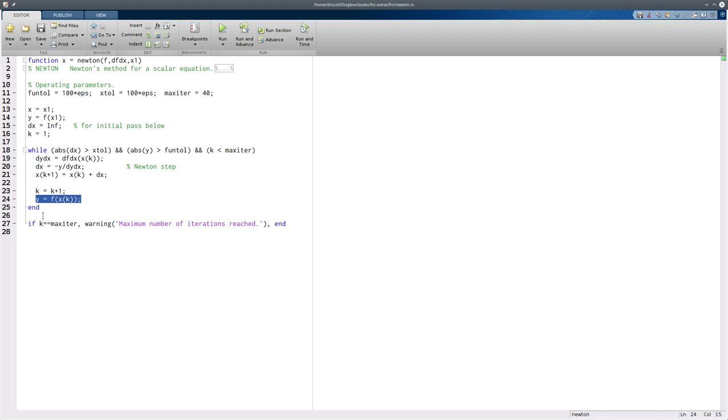Finally, at the end here, I don't simply want to pass a result quietly if I hit the maximum number of iterations. If I do hit the maximum number of iterations, something probably has gone wrong, and so this is Matlab's way of issuing something that will be printed out, but execution will continue so that the value is returned.